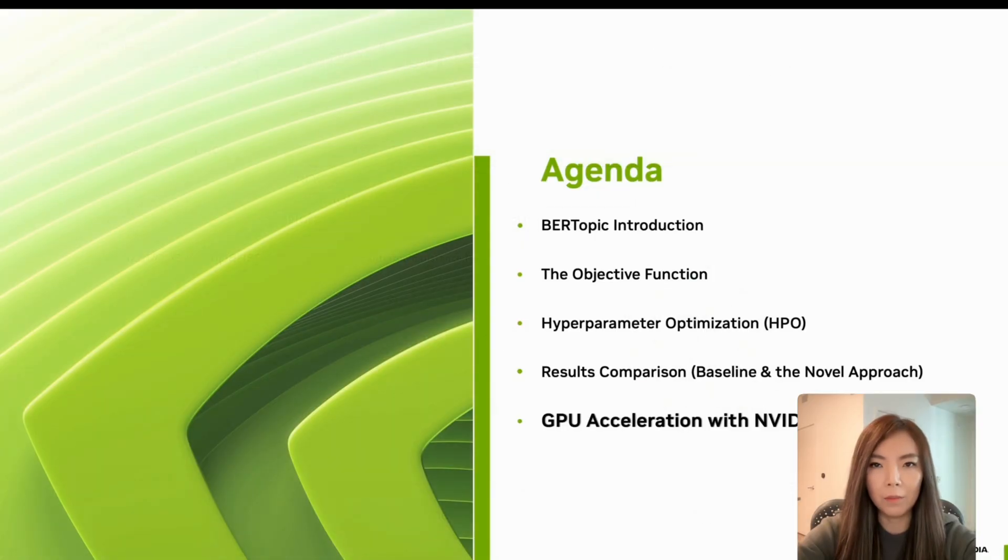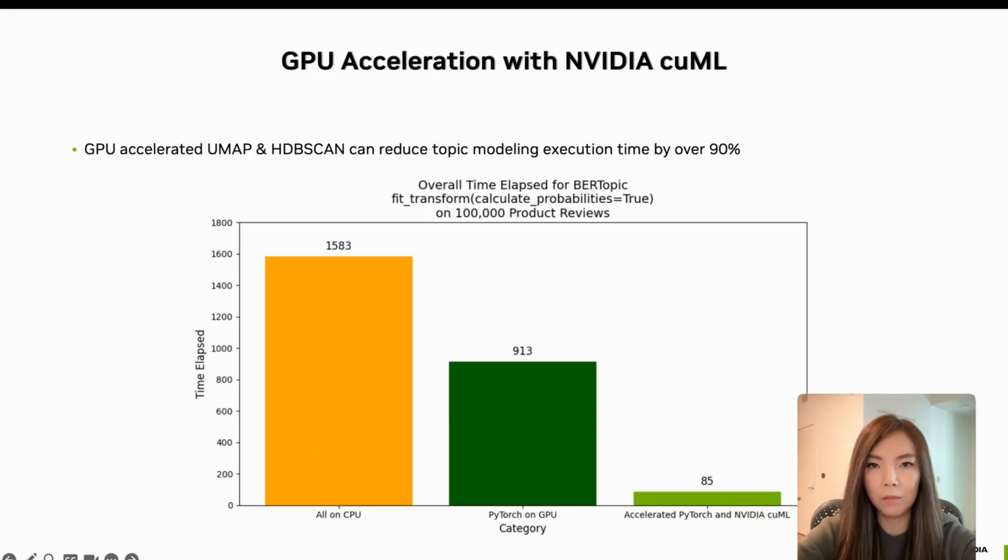Now let's talk about performance, specifically GPU acceleration using NVIDIA cuML. What you are seeing here is a benchmark, comparing the overall execution time of BERTopic's fit_transform on a dataset of 100,000 product reviews. On the left, we have the baseline where everything runs on the CPU. This setup takes 1,500 seconds to complete.